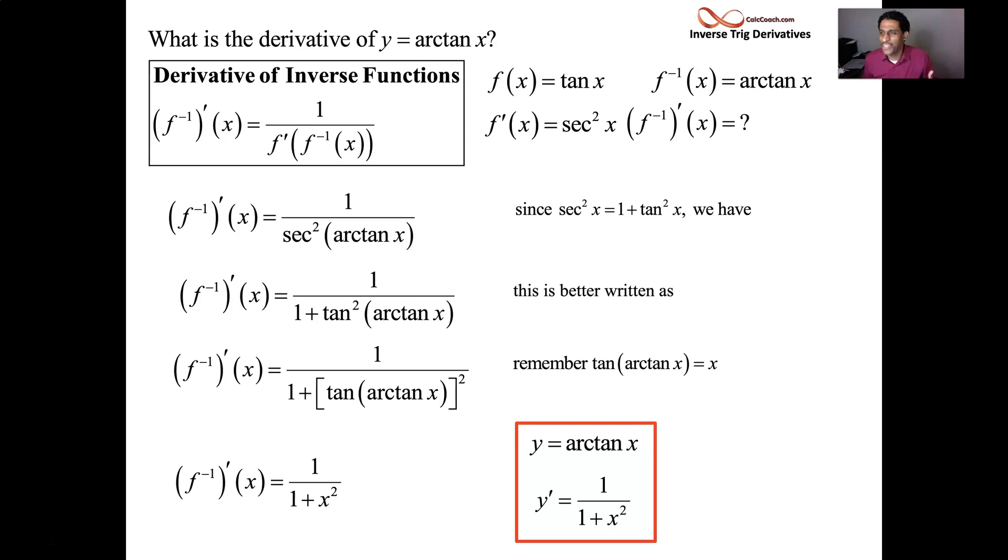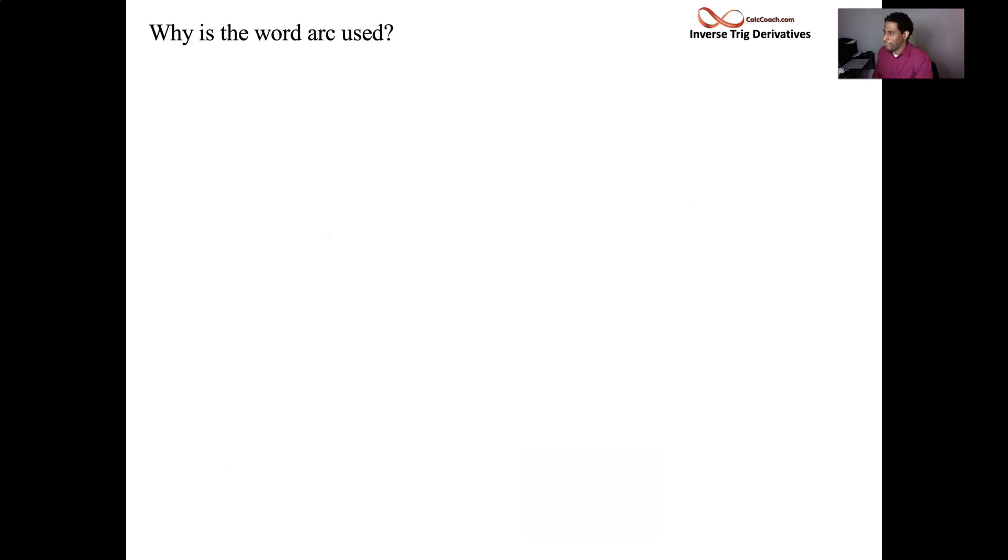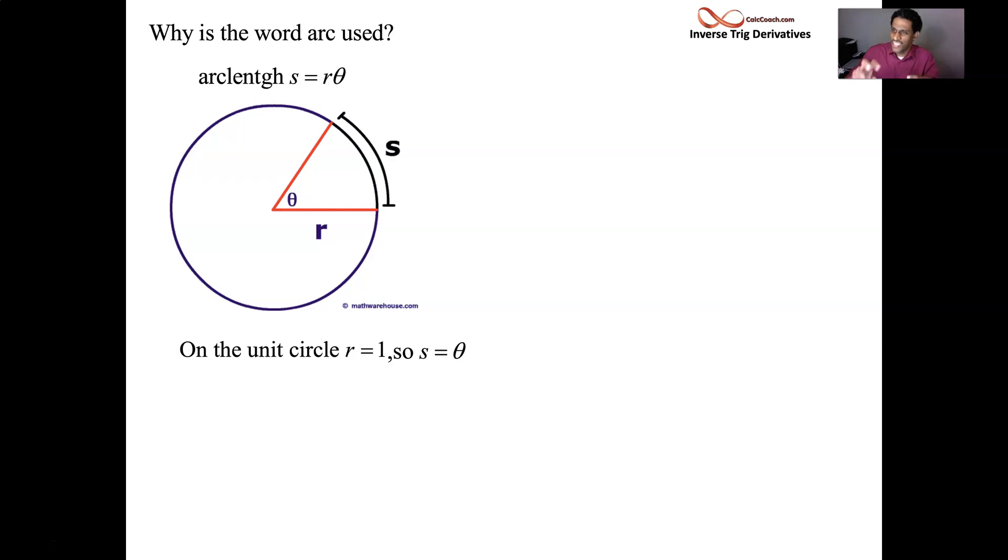I want to answer some background questions. Why is the word arc used? Seems strange. Why arc? It has to do with arc length. If you have a circle of radius r, the letter that's often used for arc length is s. And there's a formula relating s and r and theta that the product of the central angle theta and the radius is how long the arc that will be cut by that angle, by that central angle. So s is equal to r theta. What about when r is equal to 1? Like for the unit circle, r is equal to 1. This formula then says that s is equal to theta.